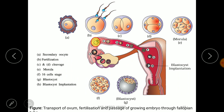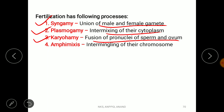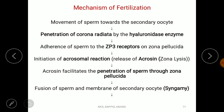The ampullar-isthmic junction is where sperm and ovum fertilize to form the zygote. The entire process of fertilization can be divided into four steps: first, syngamy — the union of male and female gamete; second, plasmogamy — the intermixing of cytoplasm; third, karyogamy — the fusion of the pronuclei of the sperm and ovum; and fourth, amphimixis — the intermingling of chromosomes.